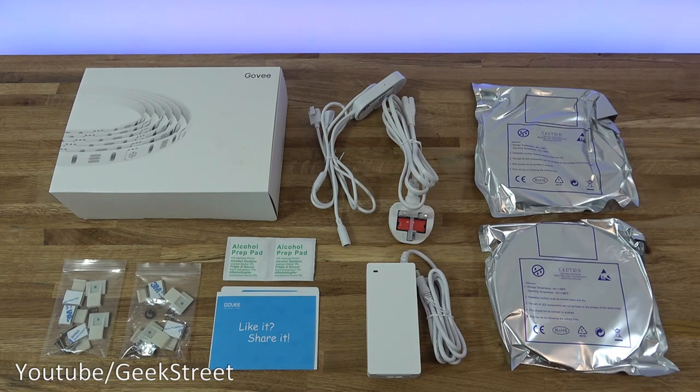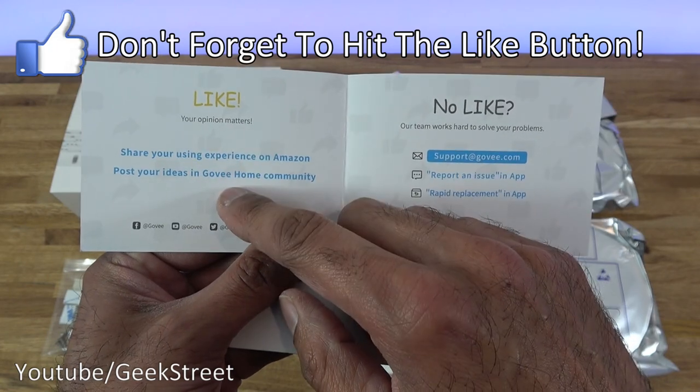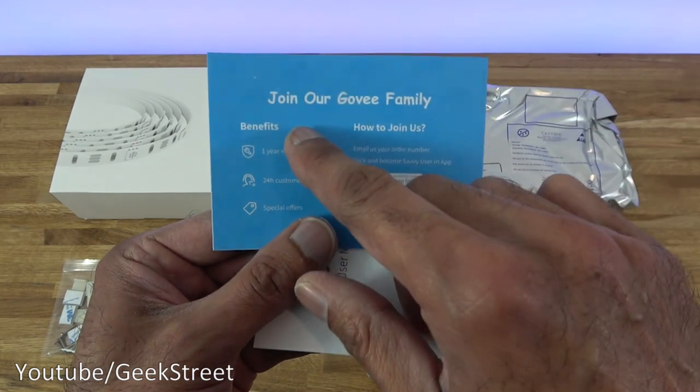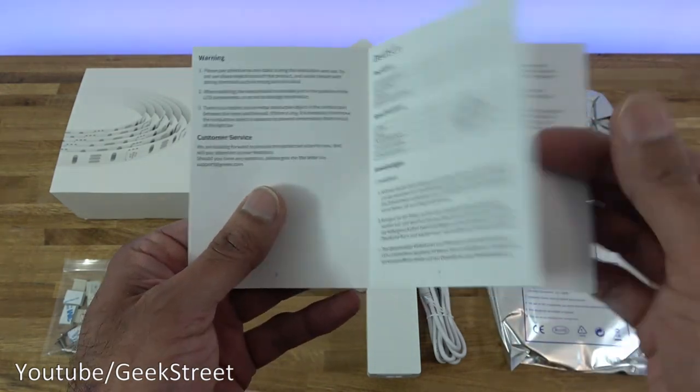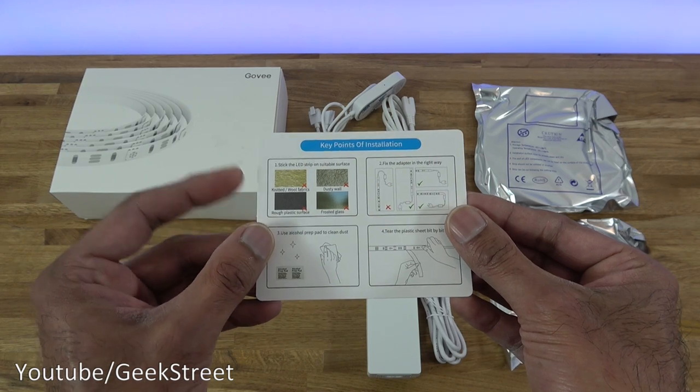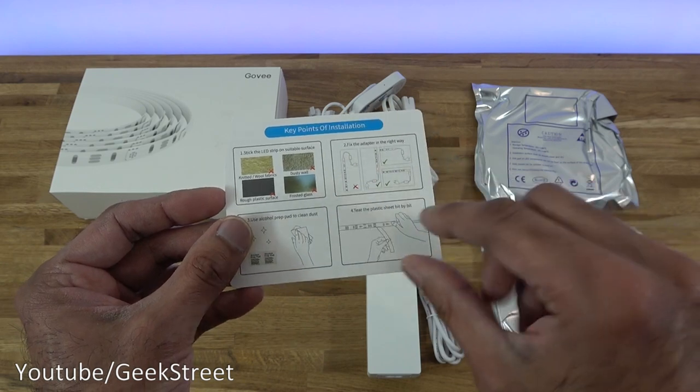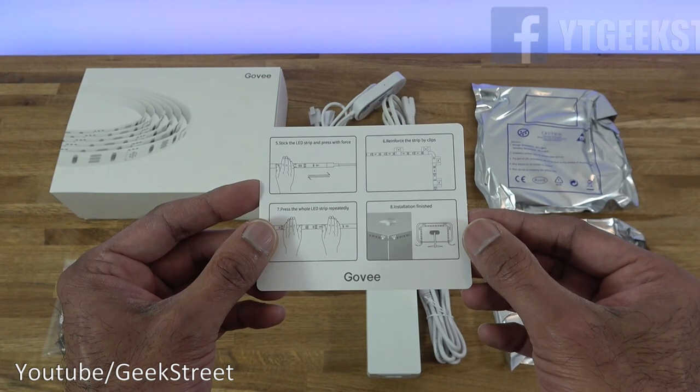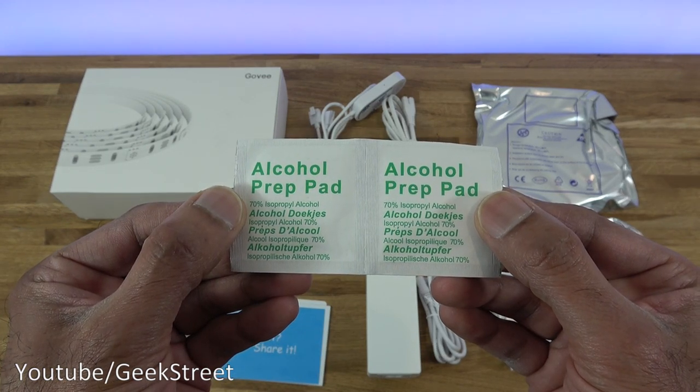I've laid out all the items you get in the packaging. You get a card saying if you like it, share your experience on Amazon. If you don't like it, reach out to their support. On the back it says join our Govi family. Next we have a user manual with details regarding setting this up in multi language. Then we have a card for key points of installation, telling you the surfaces you can install it on, to clean the surfaces, and the fact you need to take the sticky bit off the back. Then we have two alcohol prep pads for cleaning a surface before you stick it on.